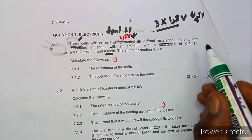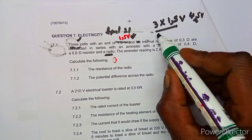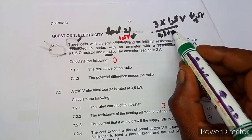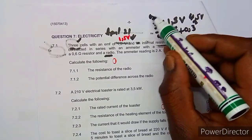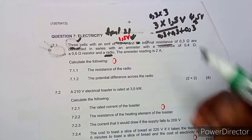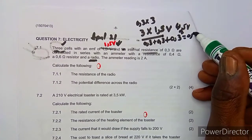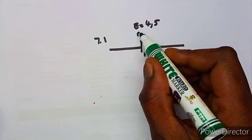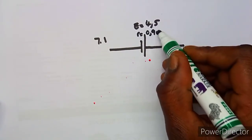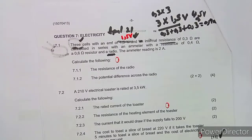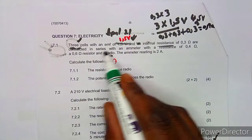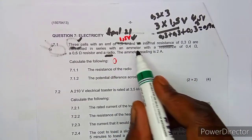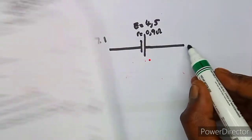The internal resistances are also in series — there are three of them, and in series you add them. So it's 0.3 + 0.3 + 0.3, or simply 0.3 times 3, which gives us a total internal resistance of 0.9 ohms.